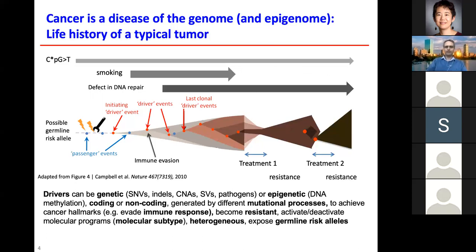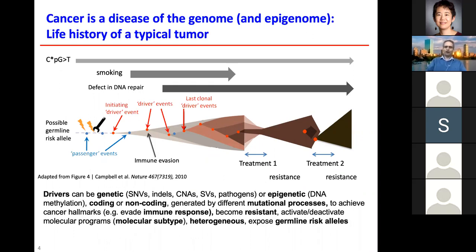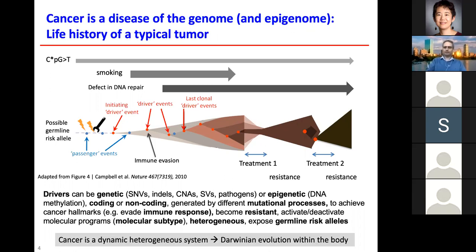To summarize: drivers can be genetic or epigenetic — anything passed from mother cells to daughter cells — in coding or non-coding regions, generated by different mutational processes, and together they achieve cancer hallmarks like evading immune response or uncontrolled growth. Cancer is heterogeneous. Some mutations expose germline risk alleles — for example, BRCA1 or 2: a person with one good copy and one bad copy may lose the good copy during life, leaving cells with only a bad copy and therefore reduced repair capacity.